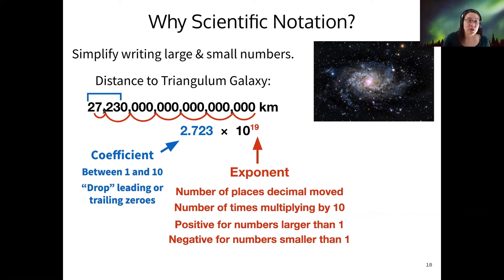And then to get to 2.723, I would have had to go back one more decimal place, so that's 19 total places that my decimal had to move. So this is always going to be positive for numbers greater than one and negative for numbers smaller than one.